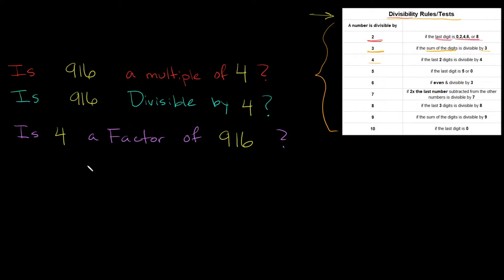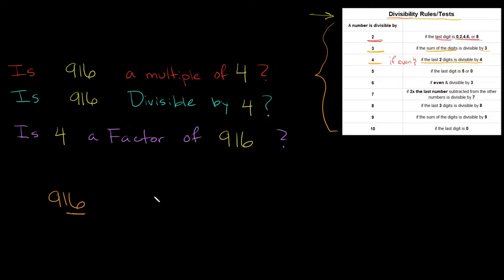Now let's move on to 4. Is 916 a multiple of 4, or is it divisible by 4? Is 4 a factor of 916? A number is divisible by 4 if the number is even AND the last two digits form a number divisible by 4. First: is 916 even? Yes, because it ends in 6. Check. Now the last two digits are 1 and 6 — in other words, 16. Is 16 divisible by 4? Yes — 4 divides into 16 evenly, 4 times. So it passes our test.